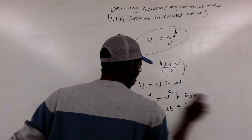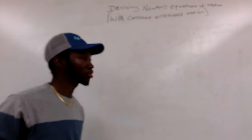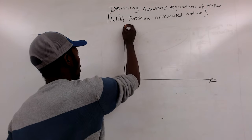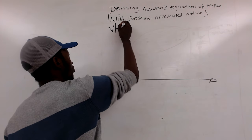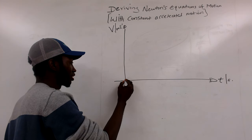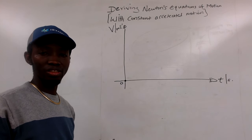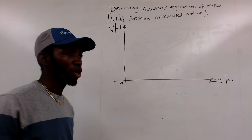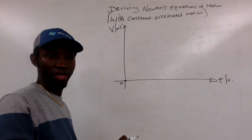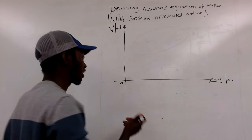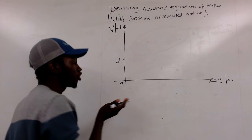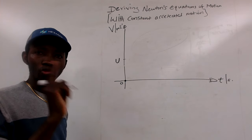To derive these equations, let's consider a velocity-time graph. The vertical axis is labeled meters per second and the horizontal axis is time with units of seconds. The starting point is zero — when the object is at rest, the initial speed is zero. When you get inside your car and start to move with a velocity — say u — that is the initial speed or starting speed. As the car moves, it covers a time t.